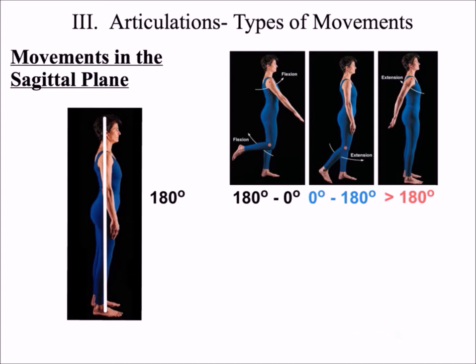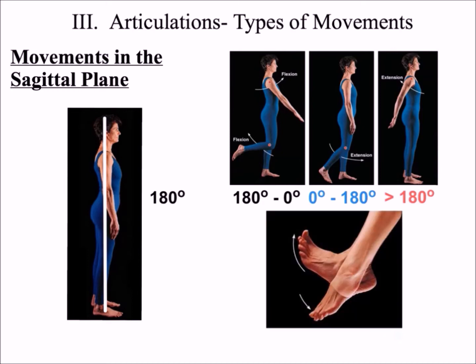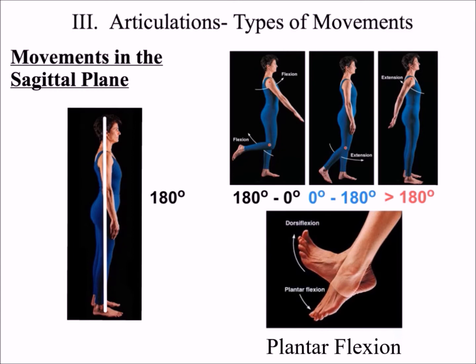There are two special movements that occur in the sagittal plane at the ankle. They are called dorsiflexion, which is pulling your toes toward your knees, and plantarflexion, which is pointing your toes away from your knees.